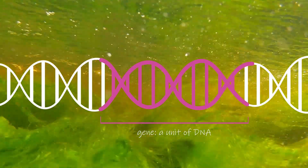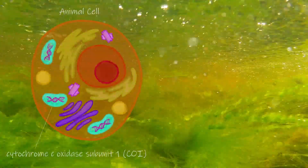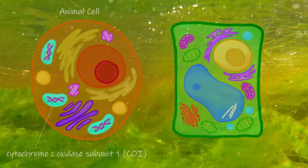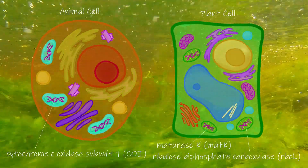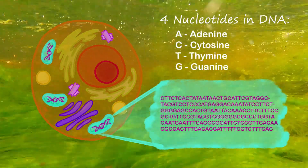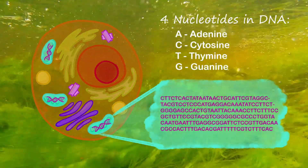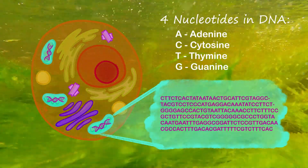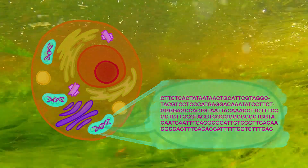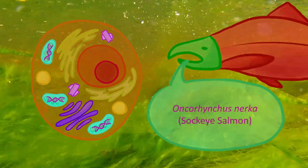The barcode in metabarcoding refers to a section of a species' DNA that differentiates it from other species. Standard barcodes are the CO1 gene in animal cells and the MATK and RBCL genes in plant cells. The unique sequence of A's, C's, T's, and G's that make up a barcode gene is like nature's name tag for the species. Metabarcoding lets us translate nature's language into human language.